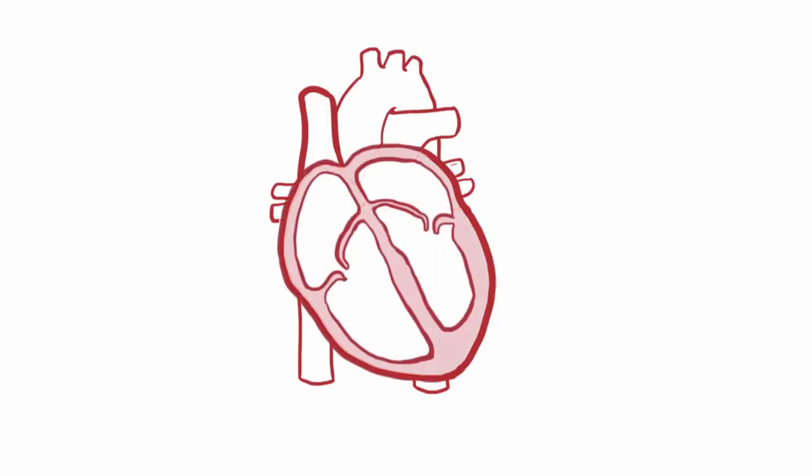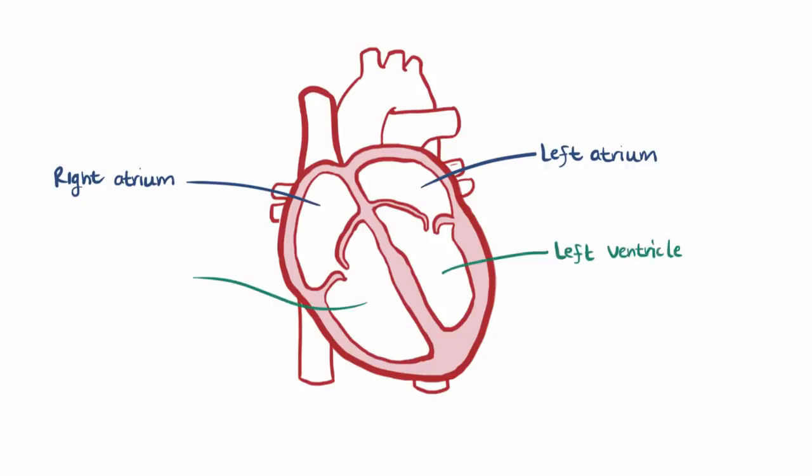The heart has four chambers. Two upper chambers, the left and the right atrium, or together the atria, and two lower chambers, the left and the right ventricles.